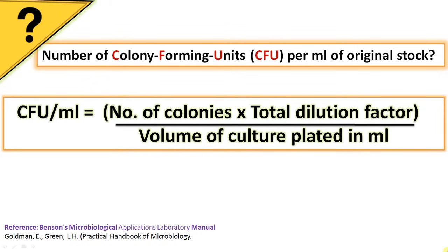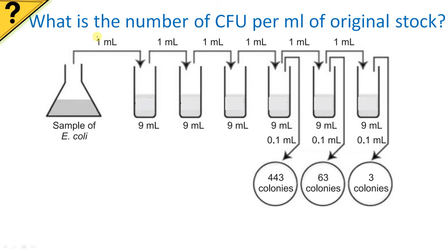Hi friends, welcome to biologyexamsfora.com. In the last video we discussed how to calculate the dilution factor in serial dilution. In this video we are going to calculate the number of colony forming units per ml of original stock using a simple equation: CFU per ml equals number of colonies times total dilution factor (TDF) divided by volume of culture plated in ml. We have divided this into three steps for easy understanding.